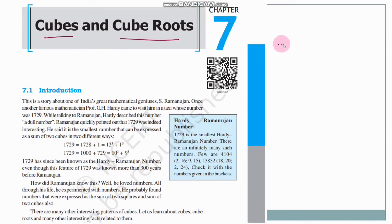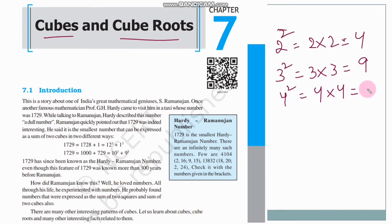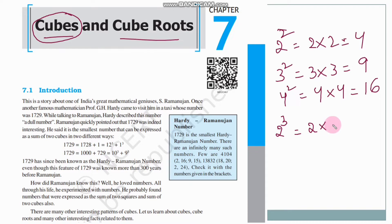For a square, we multiply the number by itself 2 times. For example, 3 squared is 9, and 4 squared is 4 into 4 which is 16. For a cube, the number has to be multiplied 3 times. So 2 cube means 2 into 2 into 2. 2 times 2 is 4, and 4 times 2 is 8. So 2 cube is 8.